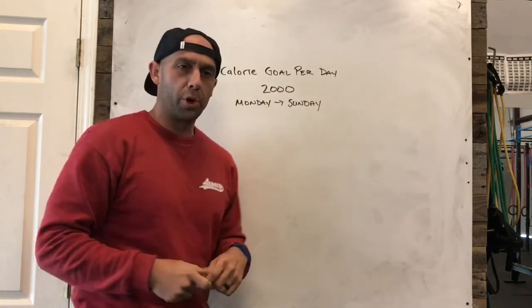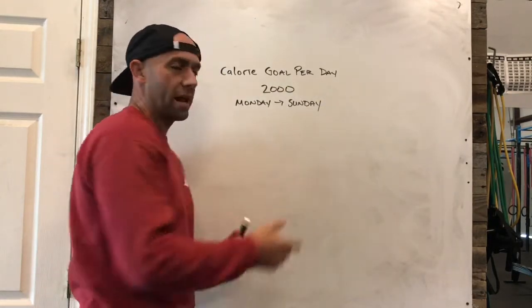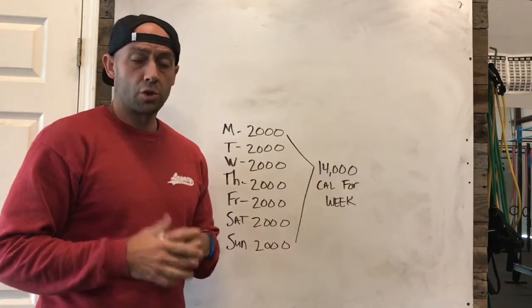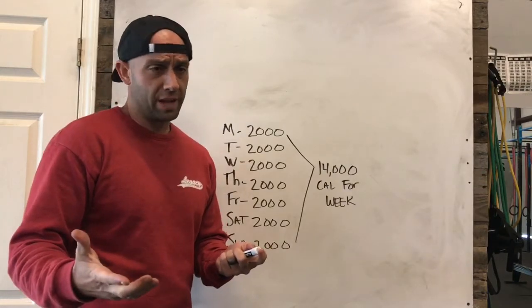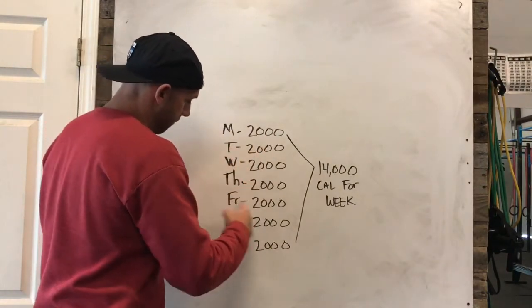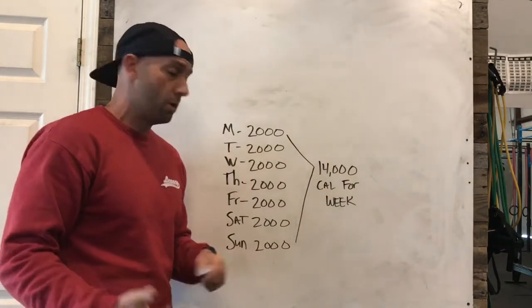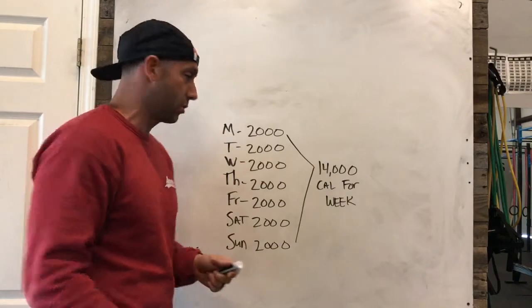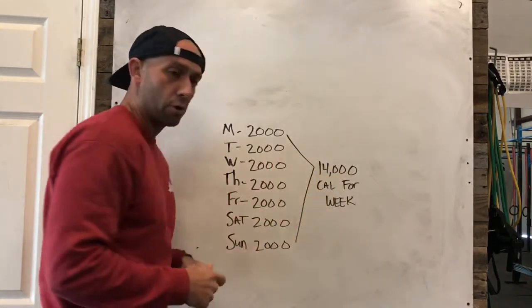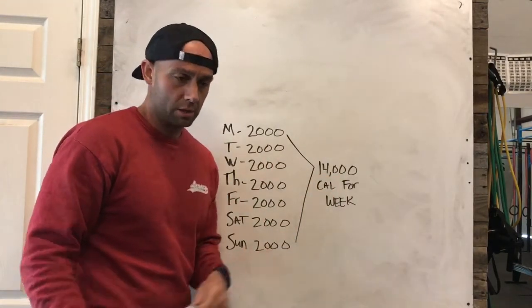So if our goal is 2,000 calories every single day—Monday, Tuesday, Wednesday, Thursday, Friday, Saturday, and Sunday—let's assume that someone is going to try and hit that every single day. That would be a total of 14,000 calories per week. Now what I've also done is I've given a scenario that I see a lot.